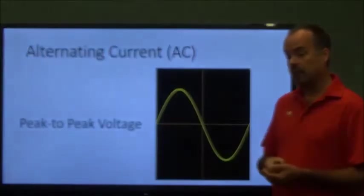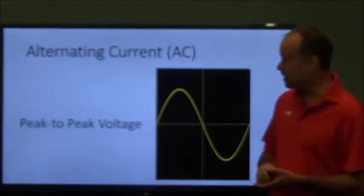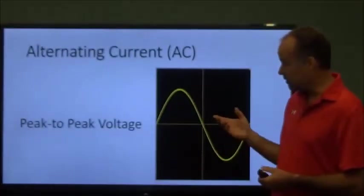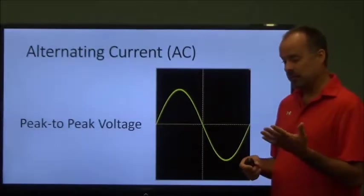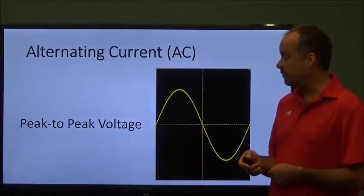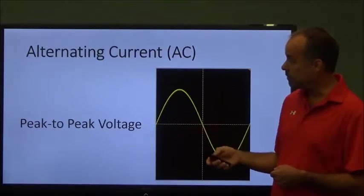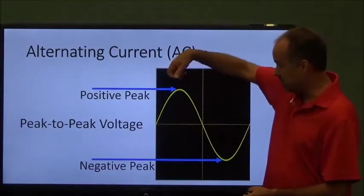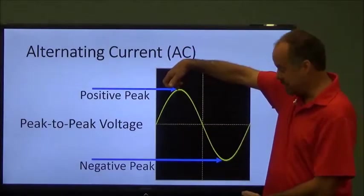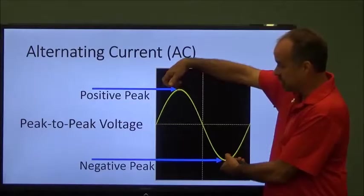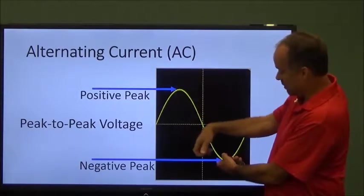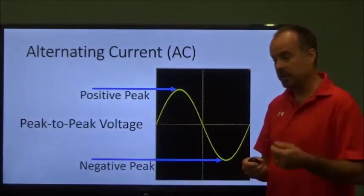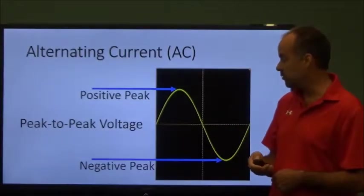To go through the important characteristics, the first thing we want to talk about is peak-to-peak voltage. When I have AC power or AC voltage, there's a couple different voltages that we need to be aware of. And, one of them is peak-to-peak. When I talk about peak-to-peak voltage, this is going to be the difference in potential from the voltage when it's at its highest peak and when it's at its lowest peak. The voltage difference between here and here would be considered my peak-to-peak voltage.